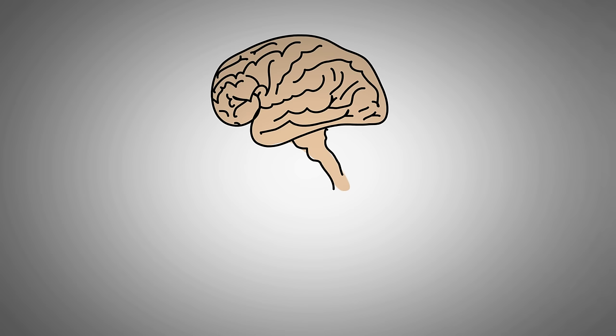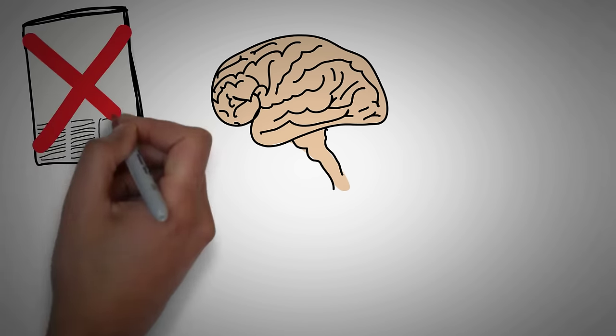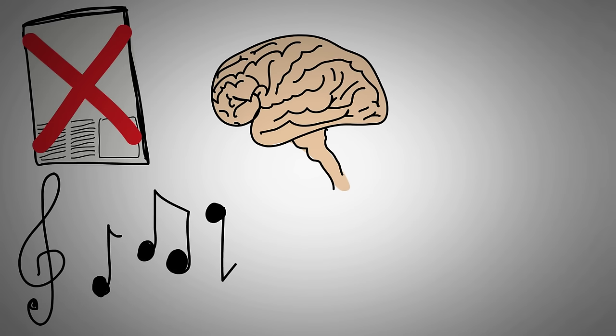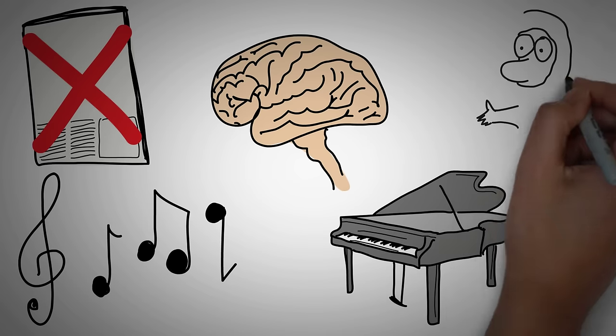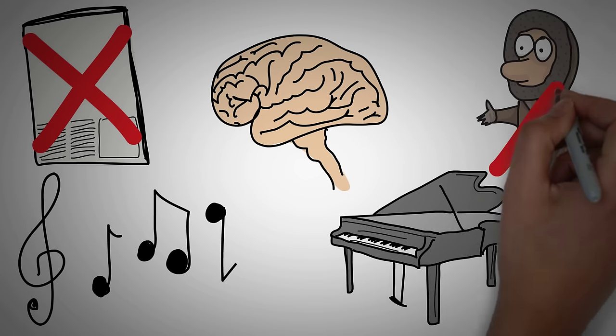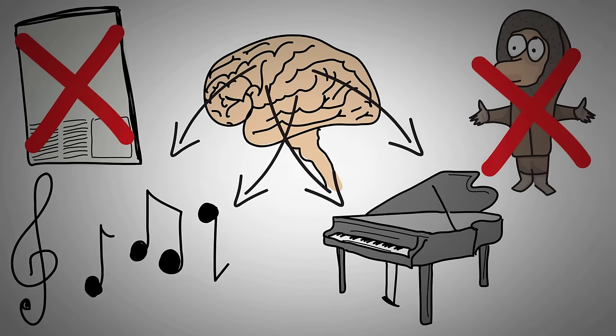Through studies of people with brain damage, we have seen patients who have lost the ability to read a newspaper, but can still read music. Or individuals who can play the piano, but lack motor coordination to button their own sweater. Today we know that music, listening and performance, engage nearly every area of the brain that we have so far identified.